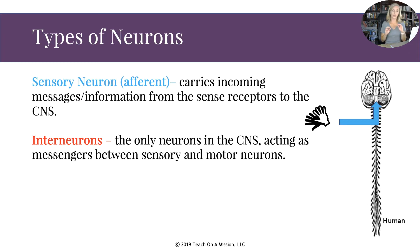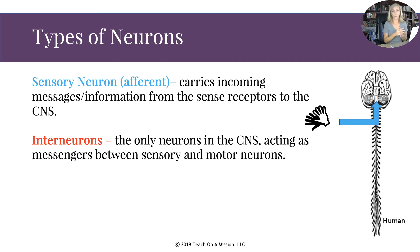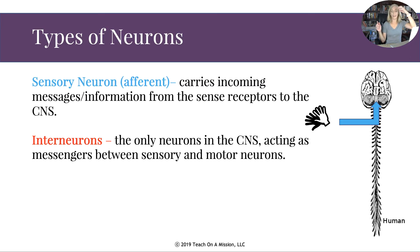Interneurons are not the opposite of sensory neurons. They are within — internal — and exist only inside the central nervous system. Sensory and motor neurons are peripheral nervous system neurons; interneurons are CNS neurons. They act as messengers between sensory and motor neurons. For example, with a paper cut: sensory neurons bring the signal to the spine, interneurons send it up to the brain, the brain sends a response back through the spine out to your muscles.